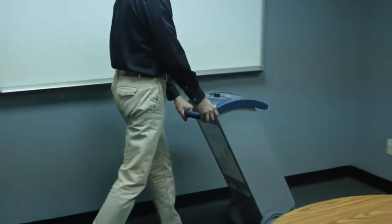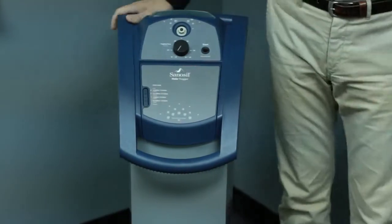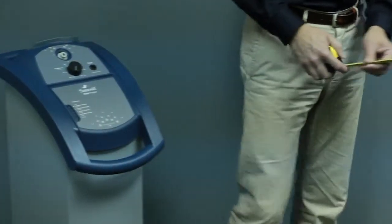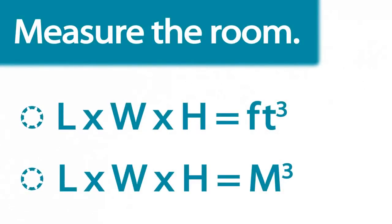Position the Halo in one corner of the room with the nozzle facing towards the center of the room. Find the size of the room you wish to treat by measuring the length, width, and height of the room and then calculate the room size in cubic feet or cubic meters. Note the final size.